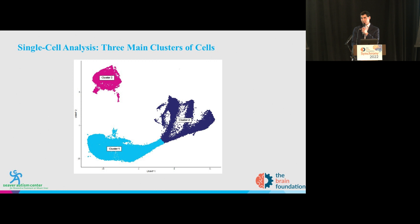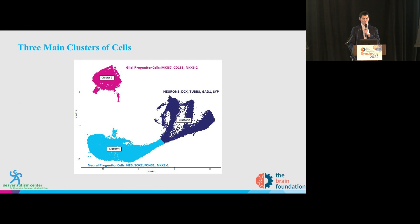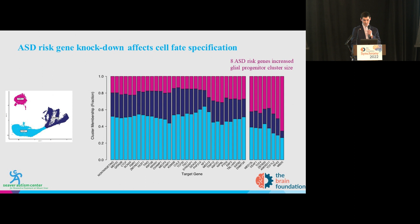Knowing that we've induced significant down-regulation of each of these autism risk genes in the same experiment, we can move on to analysis. The first analysis is clustering the cells to see what cell types we have in our population. We get a mix of cells, and to annotate them, we look for known marker genes in each cluster. We found one cluster of neural progenitor cells, one cluster of more differentiated neurons, and a top cluster representing a glial progenitor cell population.